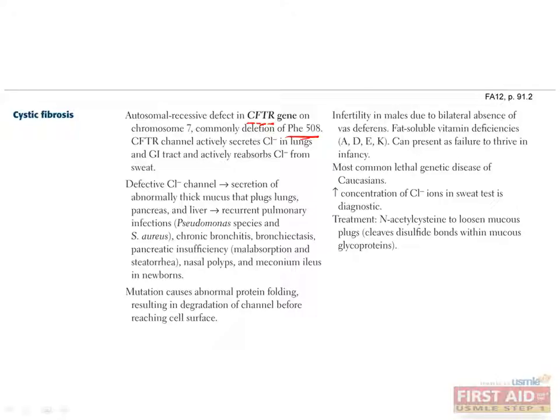The most common mutation in this gene is a mutation of phenylalanine 508, which leads to an improperly folded protein that will be degraded by the cell. Since water follows solute across membranes, the inability to secrete chloride results in thicker mucus in the lungs, the pancreas and the liver, which can block pancreatic secretions and permit pulmonary infections, especially by Pseudomonas and Staph aureus.